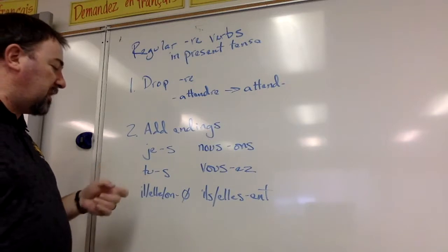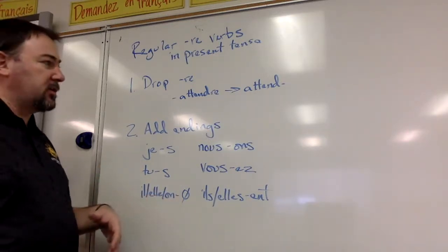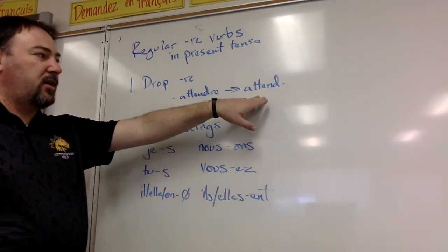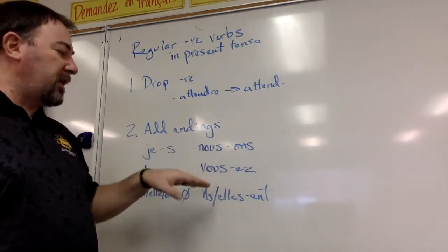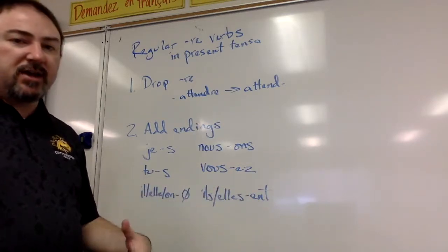For je, you add an S. For tu, you add an S. For il, elle, and on, you add nothing—so it's just left ATTEND in our example. For nous, you add ONS. For vous, you add EZ. For ils and elles plural, you add ENT.